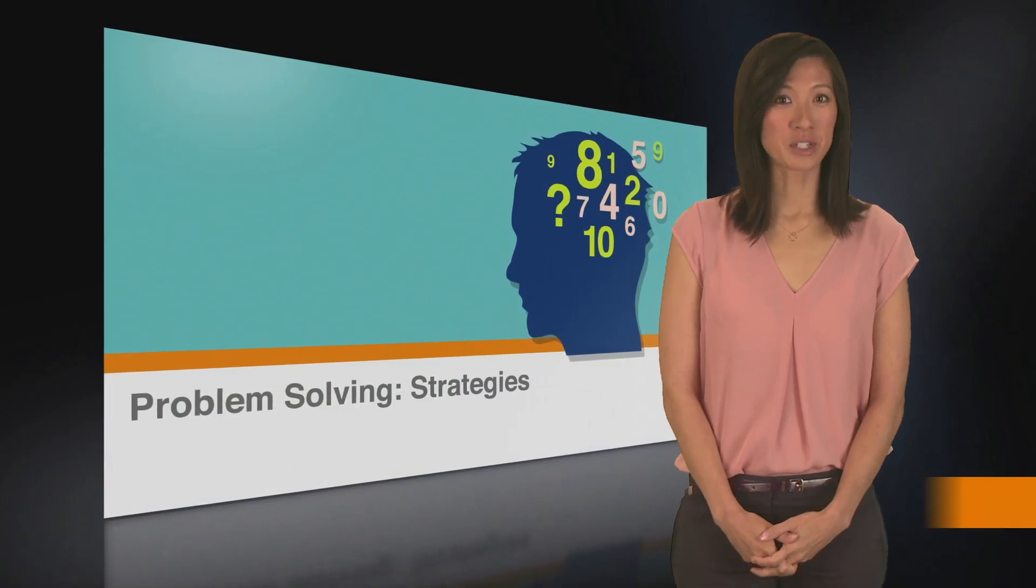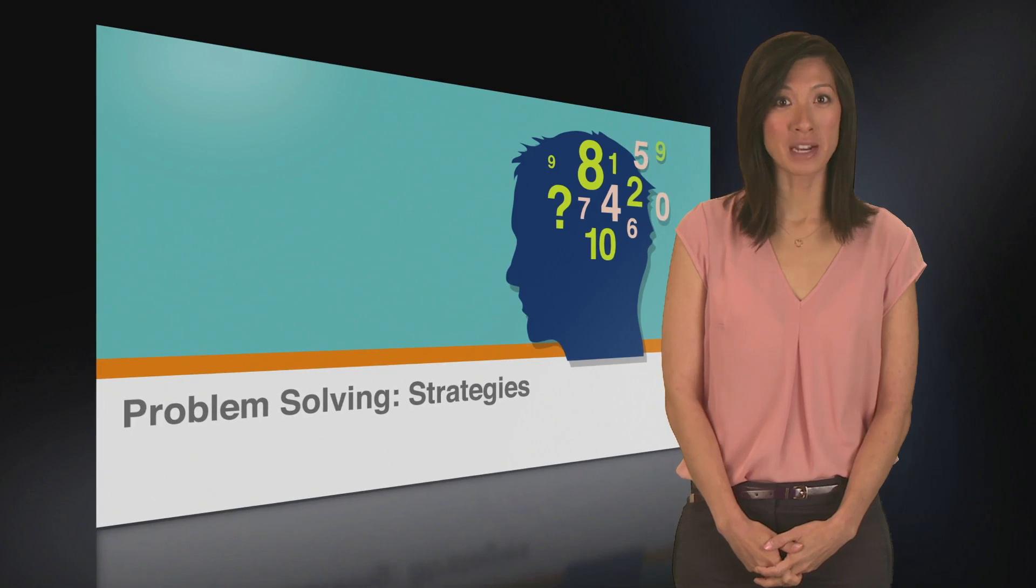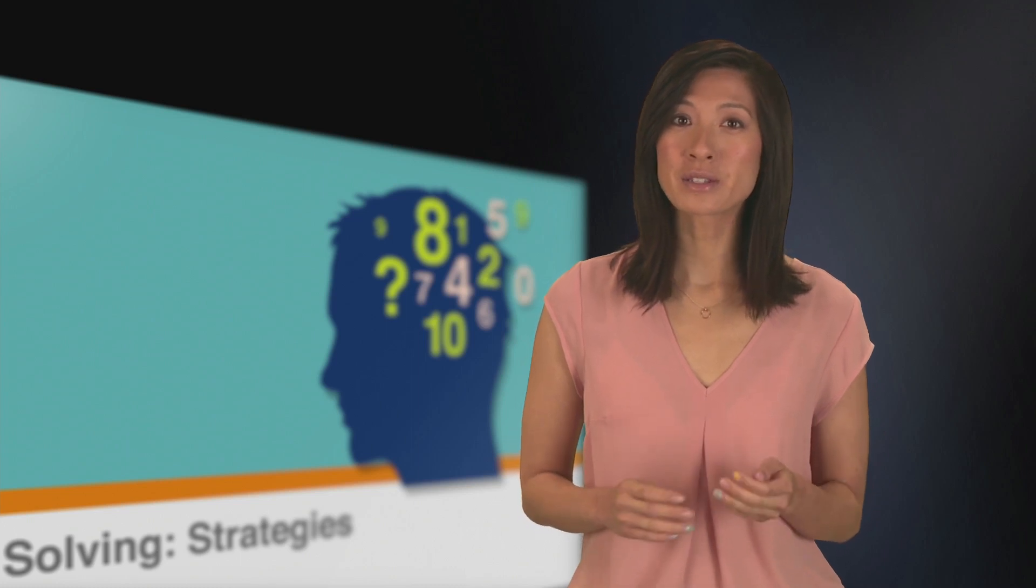Each quantitative reasoning part on the GRE will ask you to answer 20 math-related questions in 35 minutes. That's quite a bit to do. In this lesson, we'll look at some strategies that'll make it easier to solve these questions in a limited amount of time.